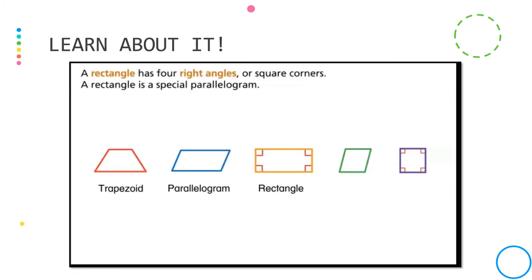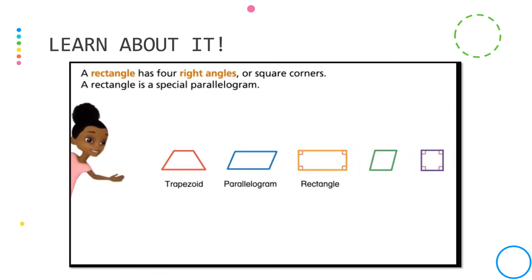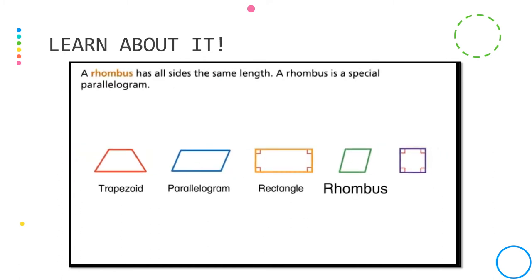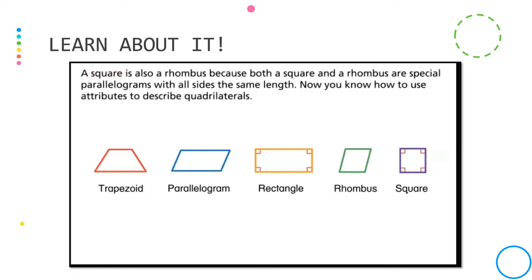A rectangle has four right angles or square corners. A rectangle is a special parallelogram, meaning any rectangle is also a parallelogram. A rhombus has all sides the same length and is also a special parallelogram. A square has four right angles and all sides the same length, making it a special parallelogram. A square is also a rhombus because both are special parallelograms with all sides the same length.